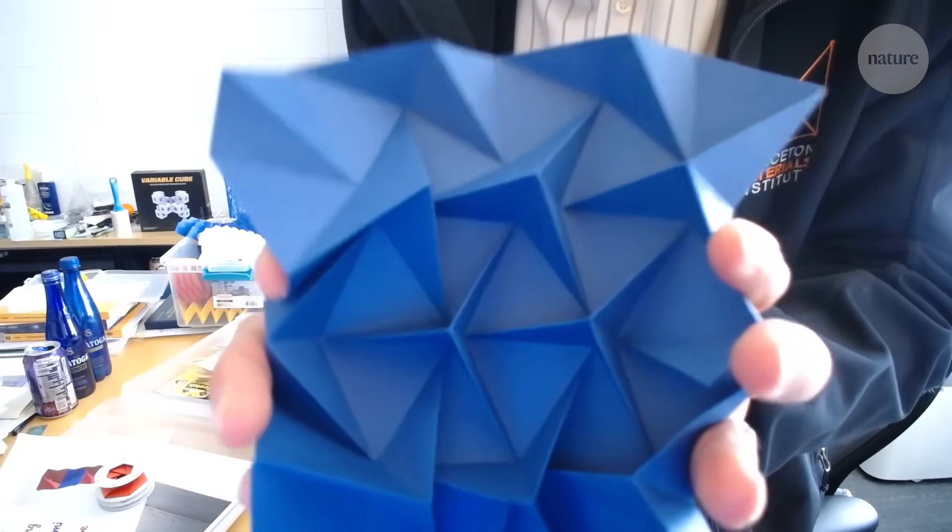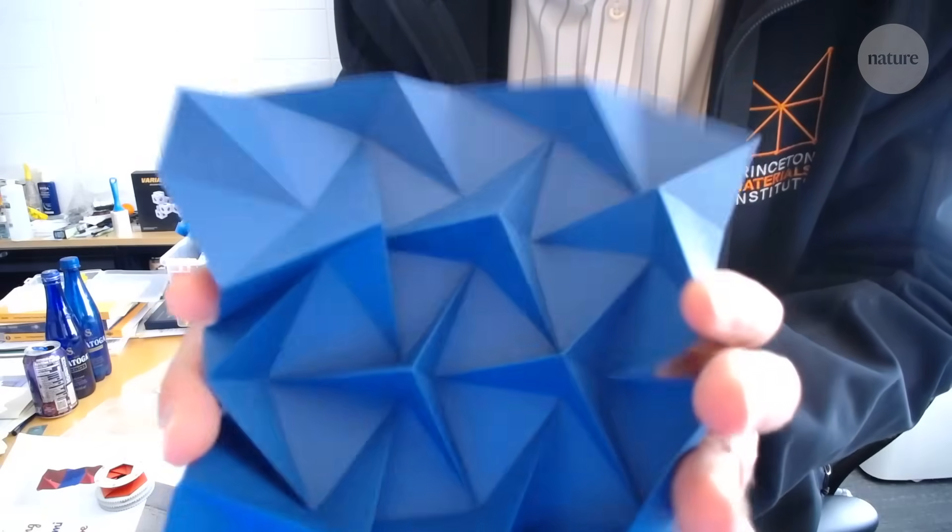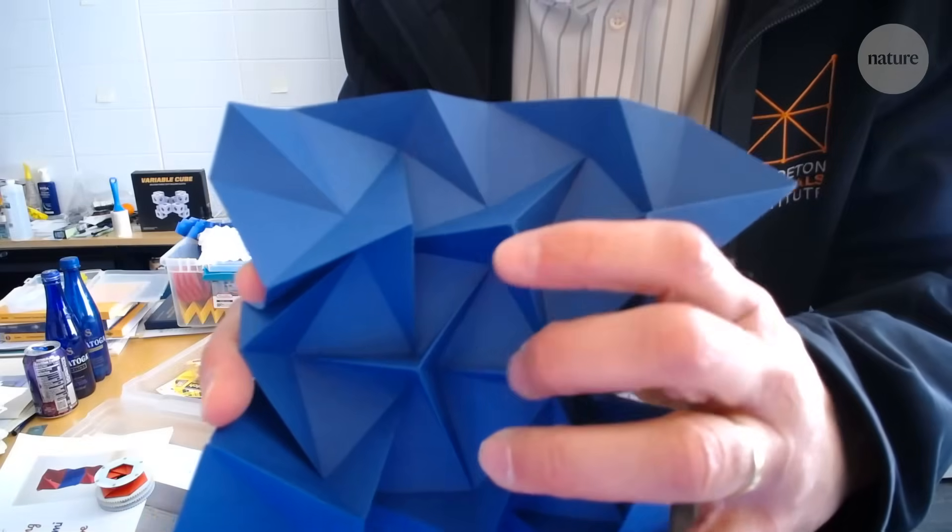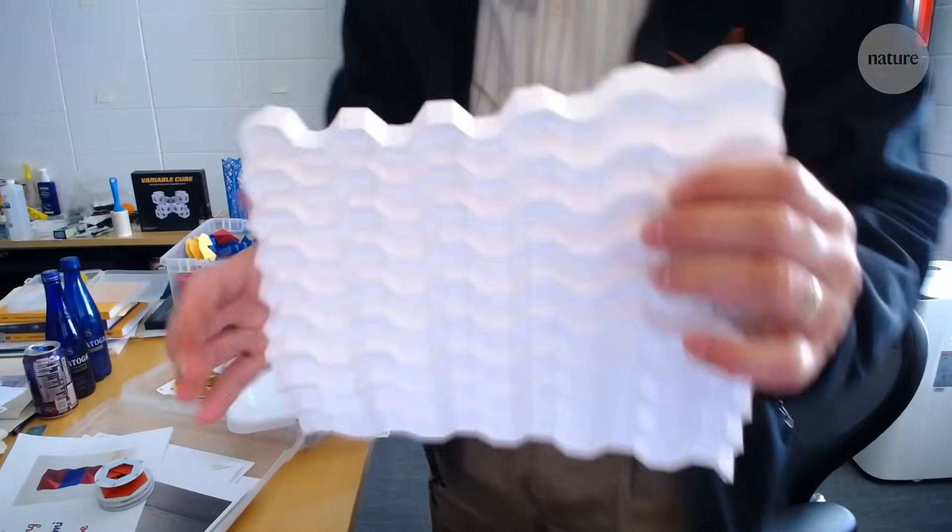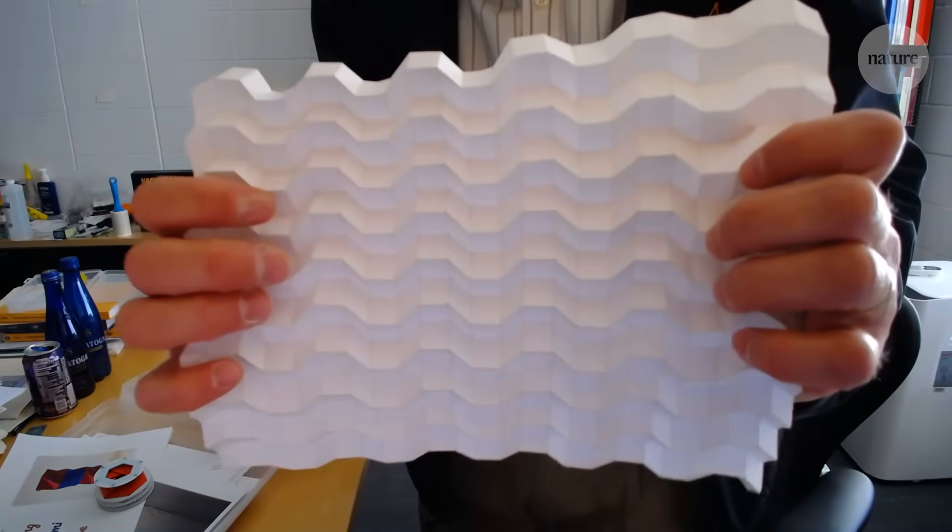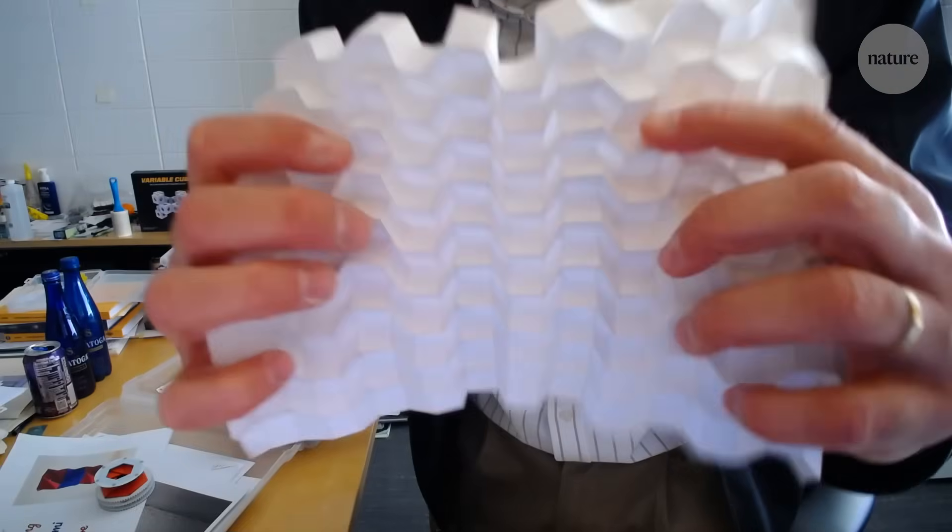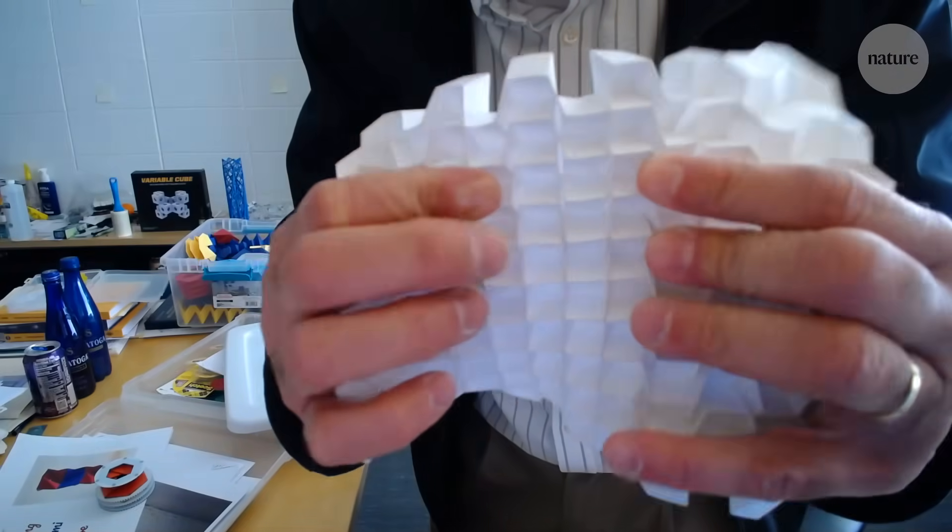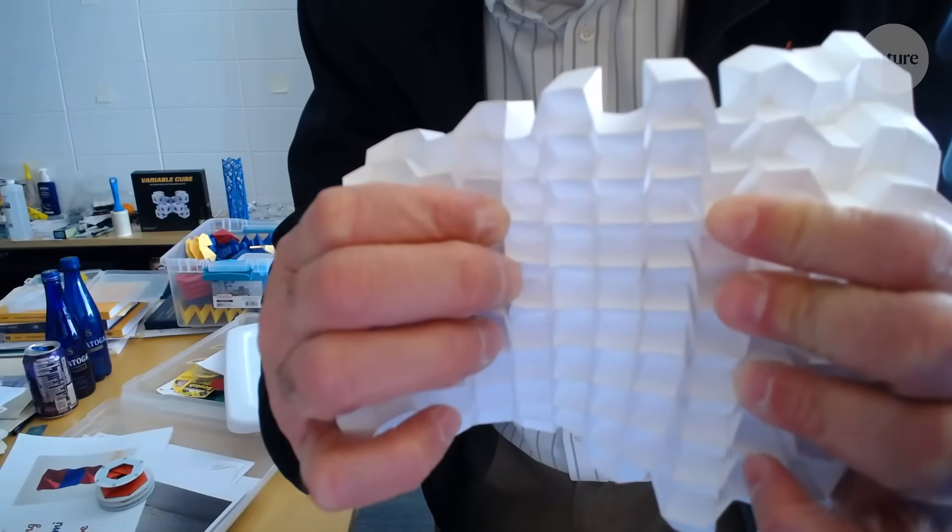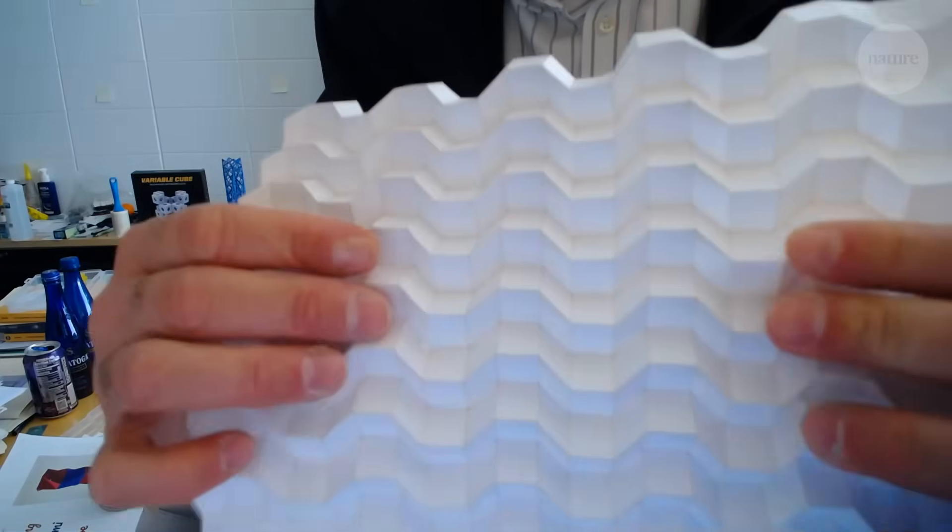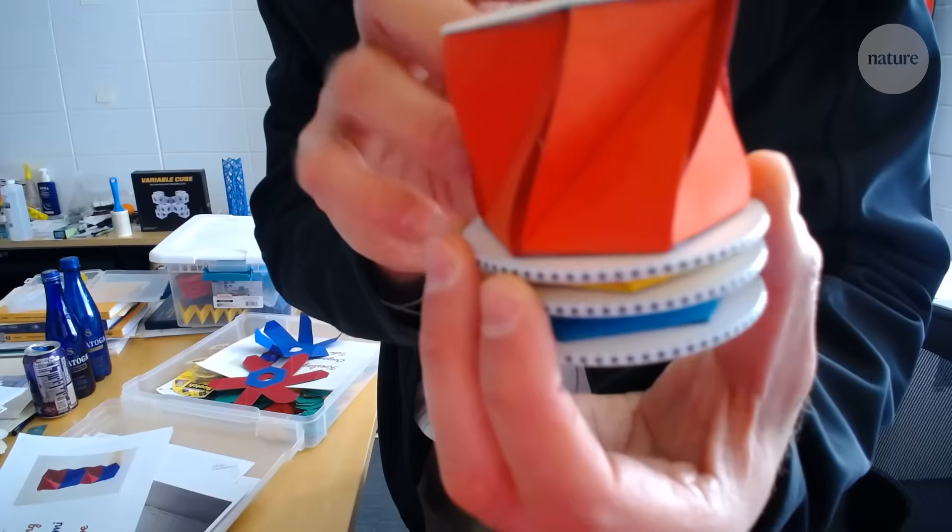The origami field has been dominated by what is called rigid origami. That means you do not deform the material. Even very complex origami like this one, this is rigid. But when I deform this, the panels are not going to deform. The difference here is that what we are doing is what is called non-rigid origami.